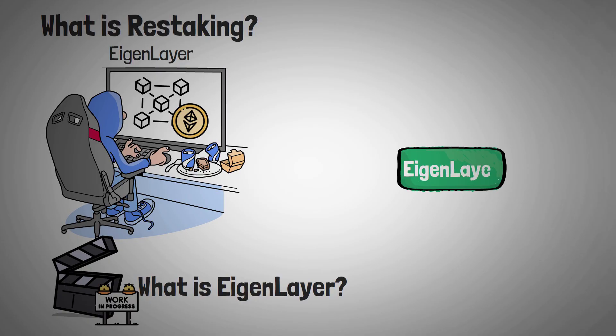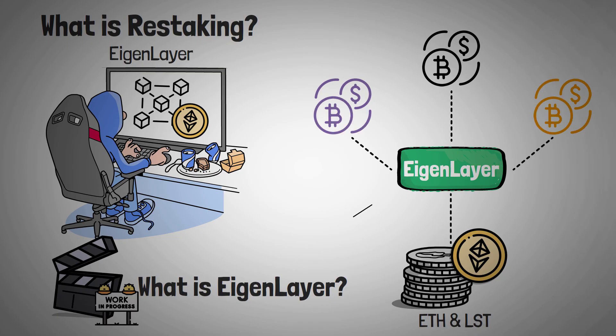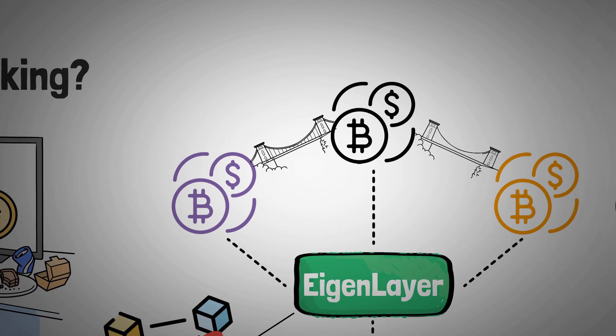But basically, Eigenlayer is a protocol built with the ability to stake your native ETH or LST tokens across multiple platforms at once. It's called restaking because you're staking your funds on a platform, and then that platform is taking your staked funds and restaking them where they believe they can earn the most return. They also don't just stay on the chain you deposited them. They can bridge them to other networks as well.